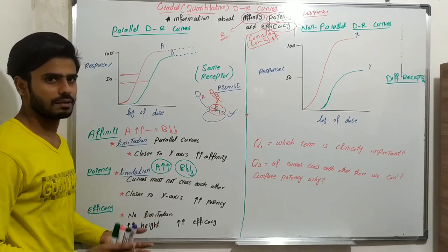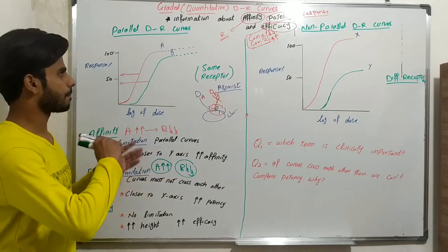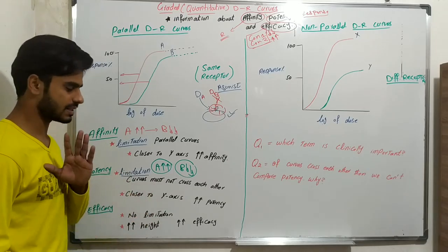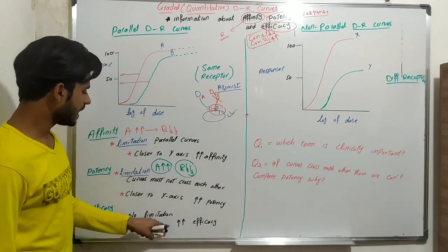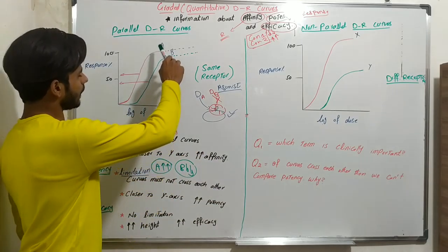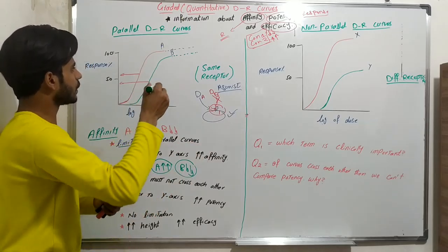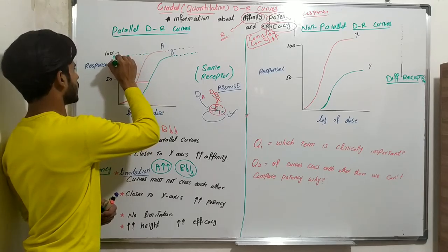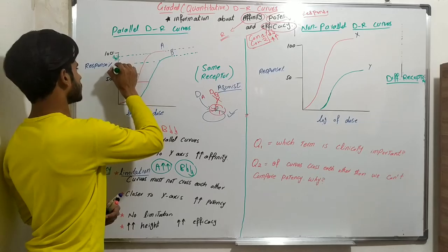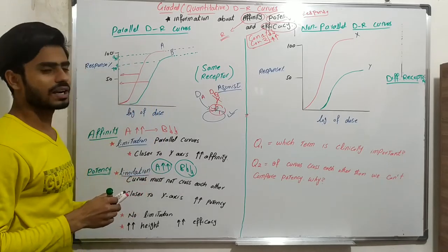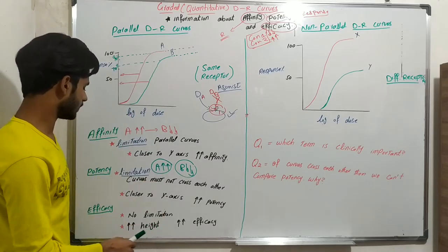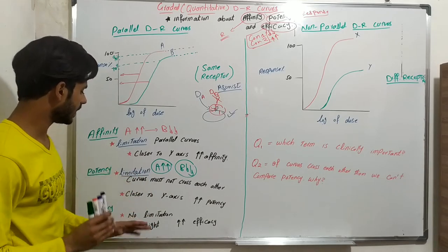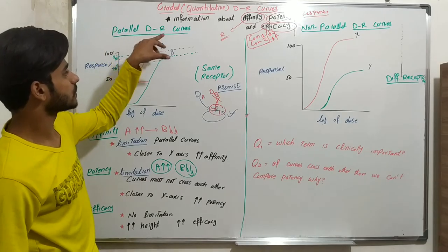For efficacy there is no limitation — whether curves are parallel, non-parallel, crossing, or not crossing, there is no such restriction. The rule is: greater the height, greater the efficacy. If drug A gives 90% response and drug B gives 70% response, then A has greater height and therefore greater efficacy. More height means more efficacy.